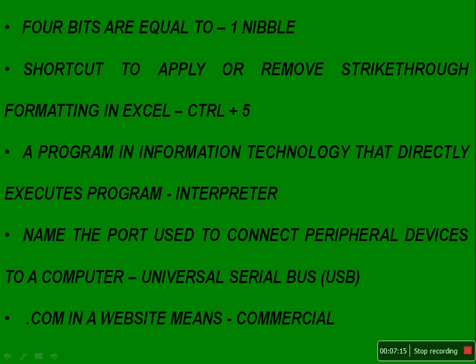The shortcut to apply or remove strikethrough formatting in Excel is Control+5. A program that directly executes code — the keyword is 'directly' — so the answer is interpreter. The port used to connect peripheral devices to a computer is Universal Serial Bus, or USB.